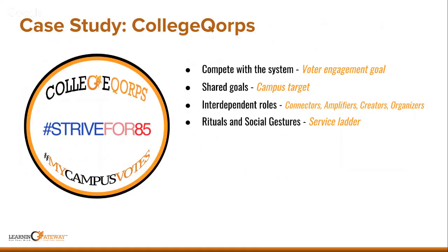For rituals and social gestures, our service-as-career-training model includes a progression service ladder — you develop skills volunteering in one role, take on responsibility, and move up in hierarchy. On the platform, a medallion can be displayed on a student's profile to indicate rank advancement. Whether using a platform like College Corps, or Facebook, or physical stickers and badges on campus, these social gestures visually remind students that they're part of something and moving toward mastery.